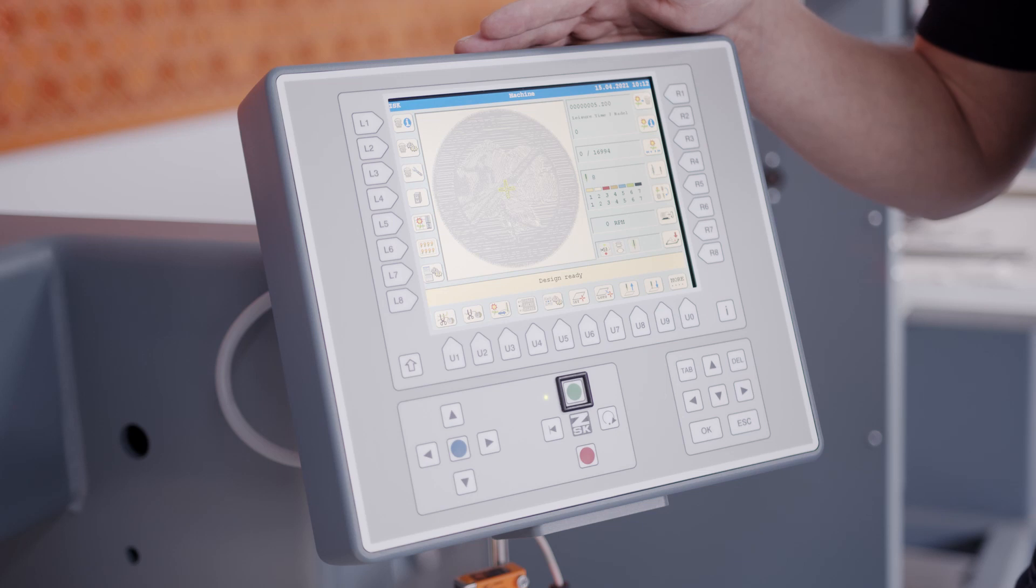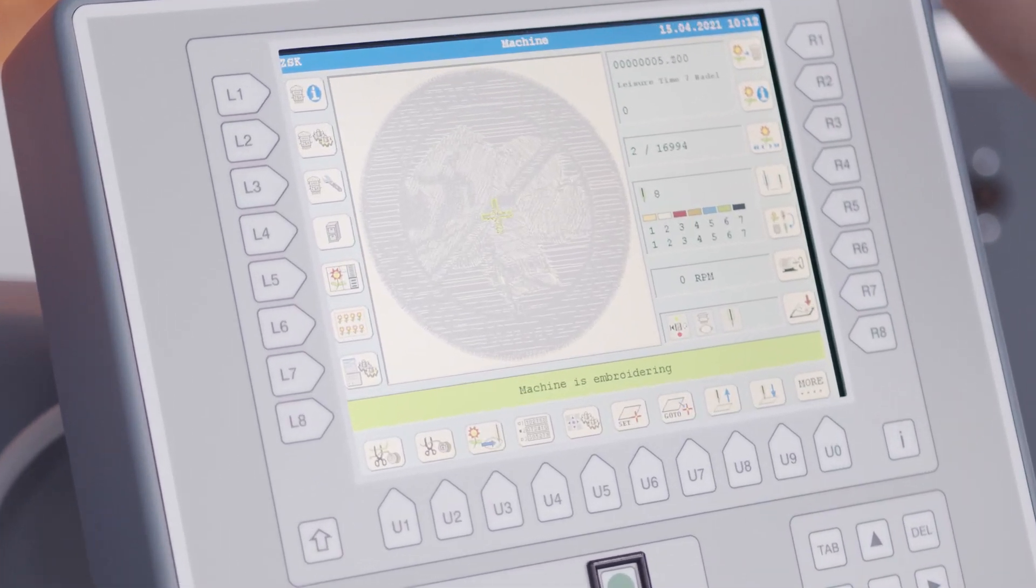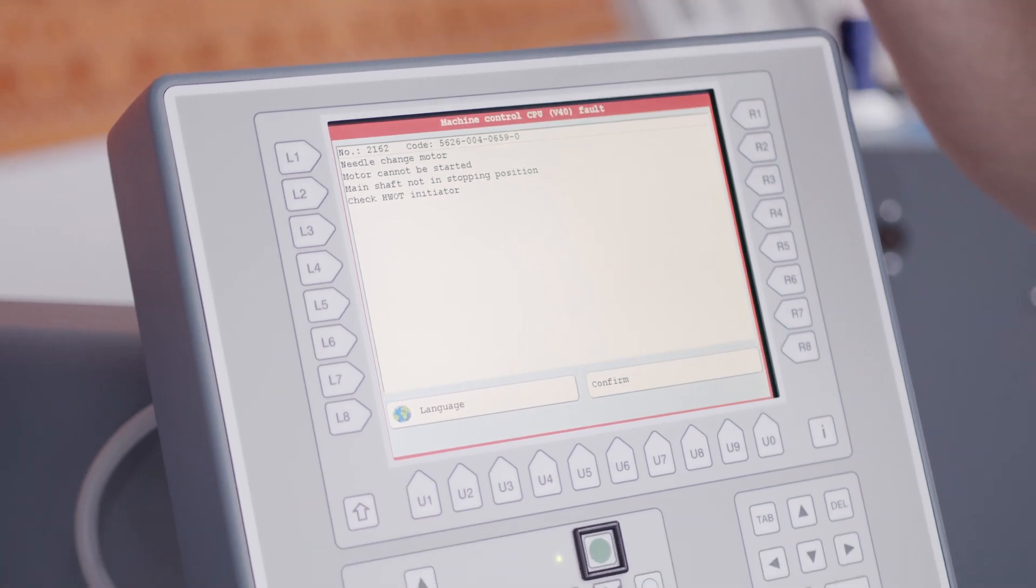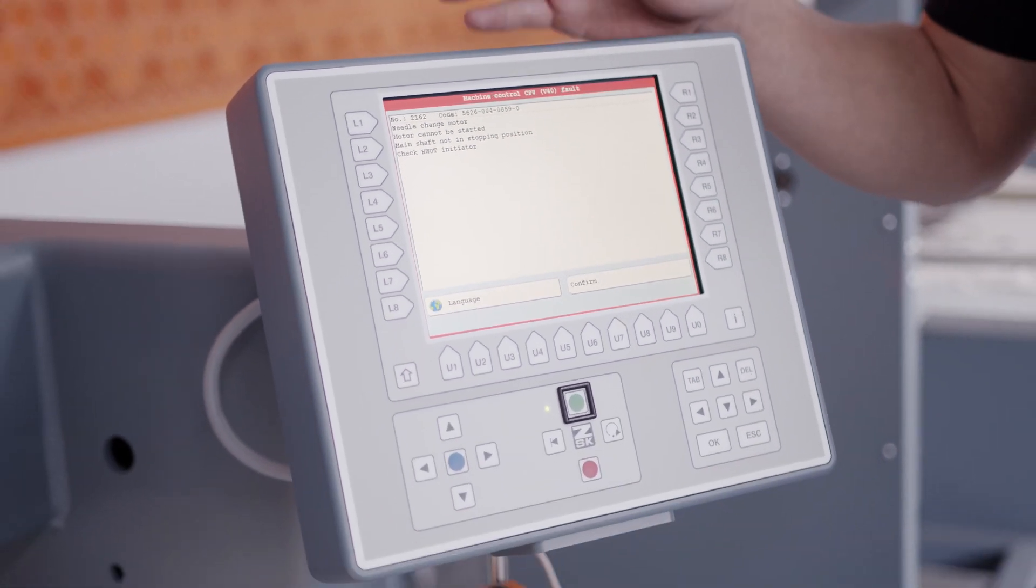If you try to run the machine after you have hit the frame you can run on one needle, but if you want to try to do a needle change the machine gives you an error message that tells us needle change is not possible because machine is not in right position. That is because upper and bottom shaft are not aligned.